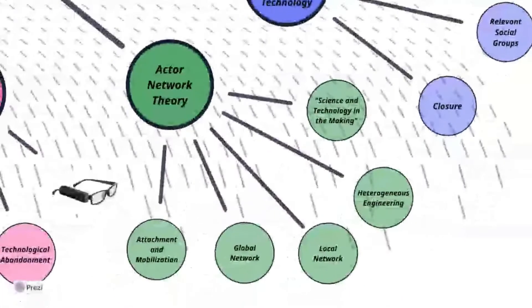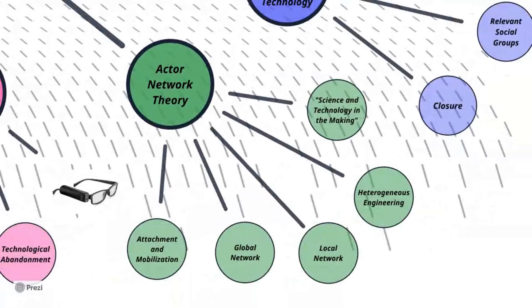Next, we have another important theory called actor network theory. ANT considers both human and non-human elements as actors within a network, and says the technology can only be birthed within that network, meaning nothing exists a priori. Whereas SCOT looks to explain the meanings of stable technical objects, ANT seeks to analyze technology in the making through heterogeneous engineering of actor networks.